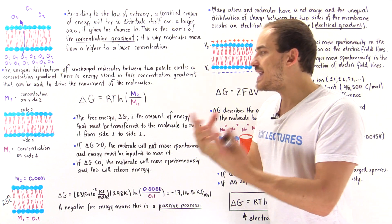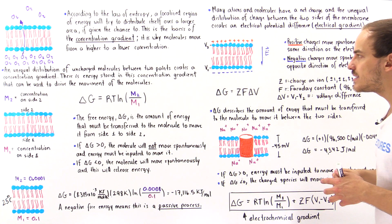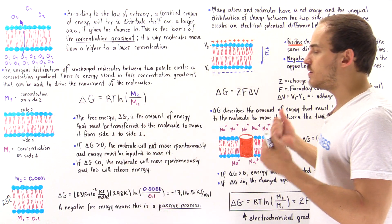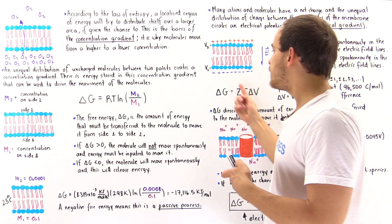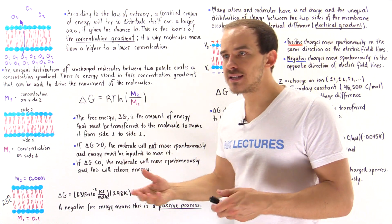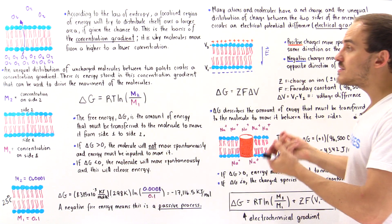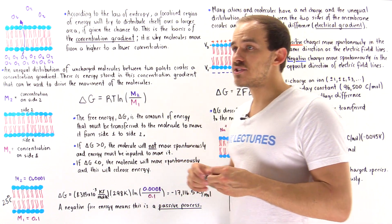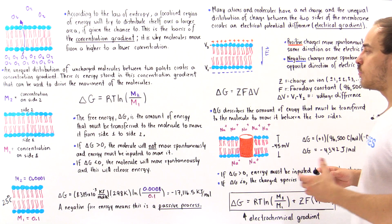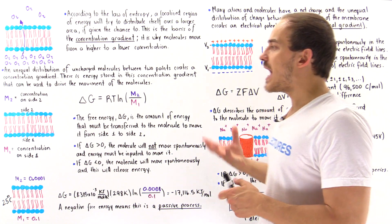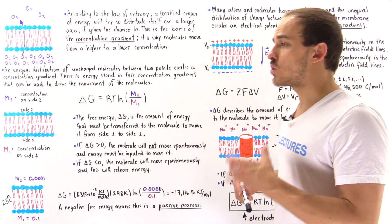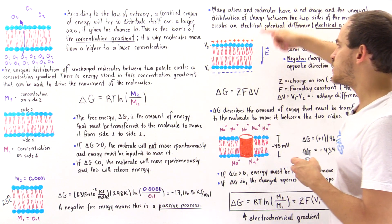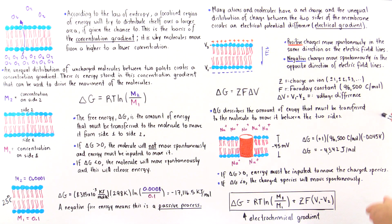If delta G is negative, what that basically means is that as the molecule moves, it releases energy, and so no work must be done — the process is a passive process involving passive transport. If delta G is positive, that involves active transport, actually using energy and doing work on that charged species to move it across that particular membrane.